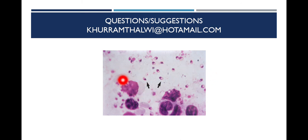The amastigote in Giemsa stain under 100x objective shows a nucleus and small cytoplasm, two to five micrometers in size. Other diagnostic methods include PCR for nucleic acid detection, and immunological or serological techniques for detection of antibodies against Leishmania or Leishmania antigens.